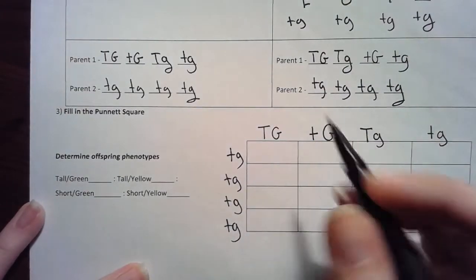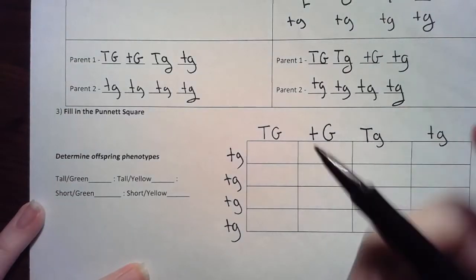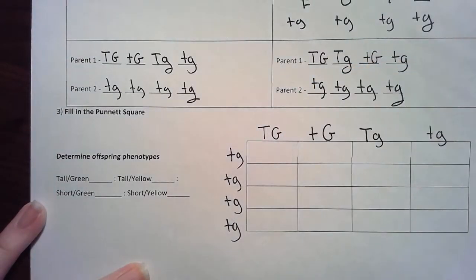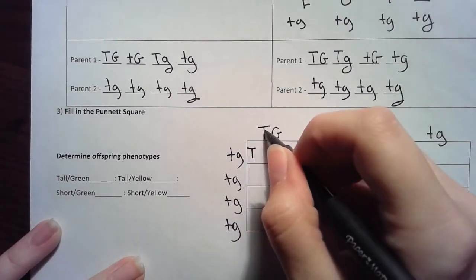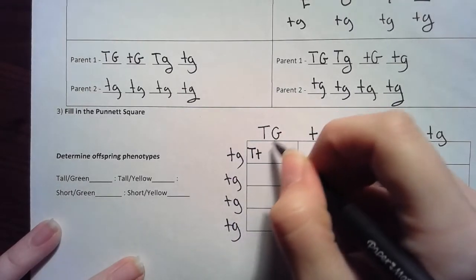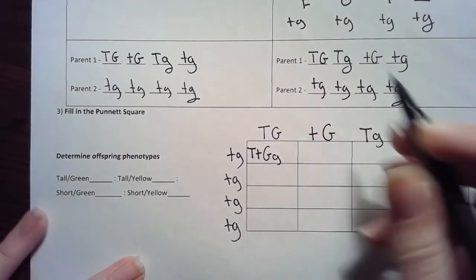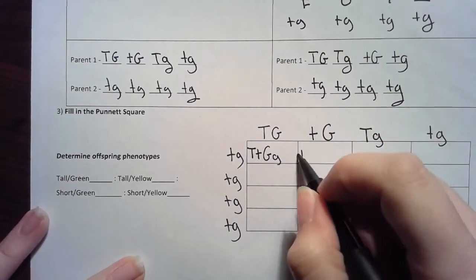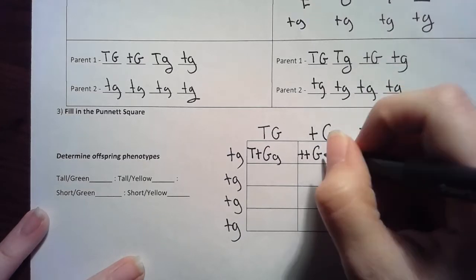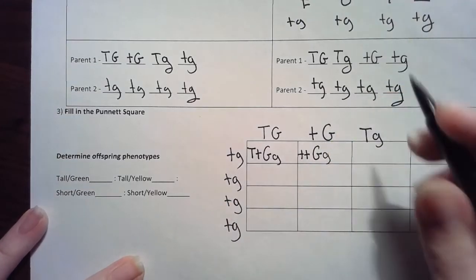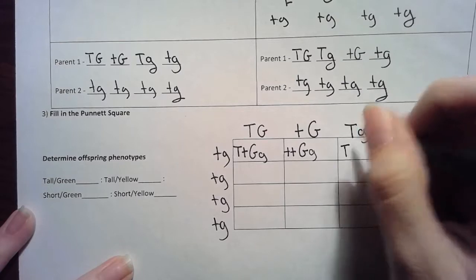When I fill in this box, I like to group my genes together, which means I'm going to write all the T's first and then all the G's second. I see capital T lowercase t capital G lowercase g. Here I see two lowercase t's, one capital G one lowercase. I'm literally just filling it up like a multiplication table, but every inner box should have four letters.